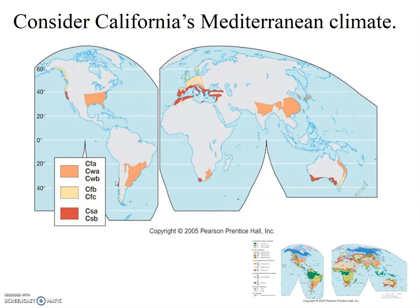Because we're in the westerlies, we get variable weather, including clouds and rain, for much of the year. Variability of weather is one of the trademarks of being in the westerlies. However, in the summertime, the subtropical high that is normally right about 30 degrees north and south moves up to about 35 degrees, and so in the summertime, we are under the influence of the subtropical high.